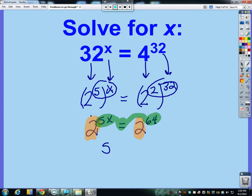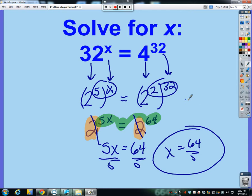So now I can just basically drop the bases and then divide the 5 over. So specifically 64 fifths, and you know that doesn't simplify it anyways, x is 64 fifths here. So 32 to the 64 fifths power is the same thing as saying 4 to the 32nd power. So there is how to work with some tricky exponents without the aid of the calculator.